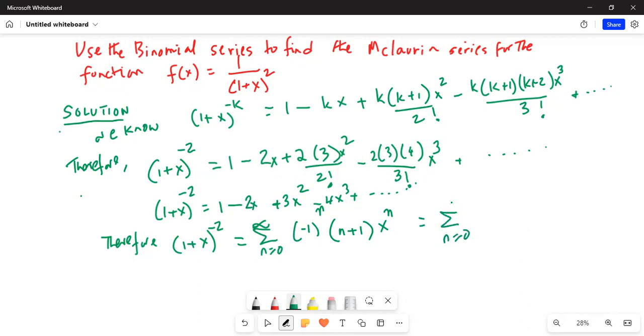Summation n equals 0 to infinity, (-1)^n(n+1)x^n. Okay, that's your final answer. This is the Maclaurin series.